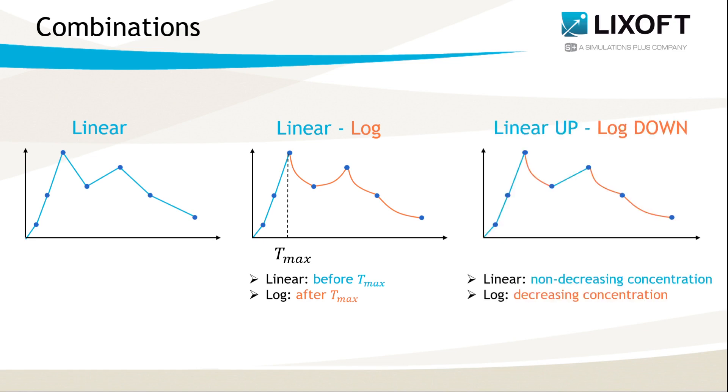Another option, called linear up-log down, applies the linear formula when the concentration is non-decreasing, so when it goes up or is stable, and the logarithmic formula when it goes down. It is suitable when there are, for example, two absorption peaks, and the concentration has two absorption and two elimination phases.